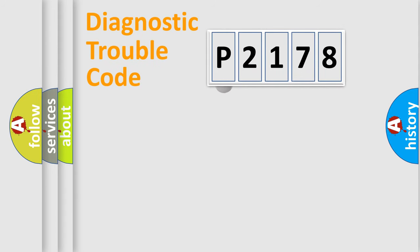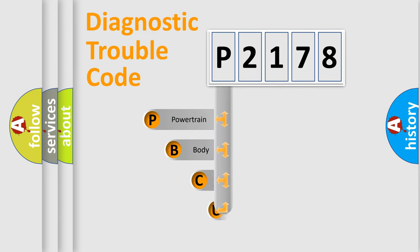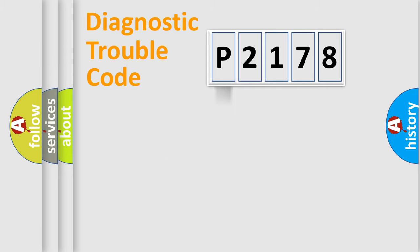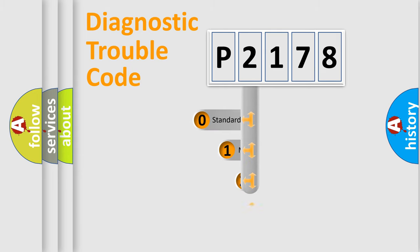First, let's look at the history of diagnostic fault code composition according to the OBD2 protocol. We divide the electric system of an automobile into four basic units: powertrain, body, chassis, and network. This distribution is defined in the first character of the code.